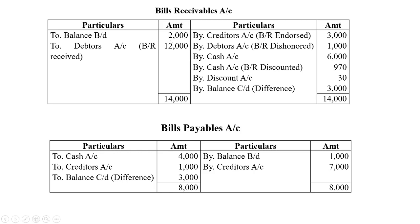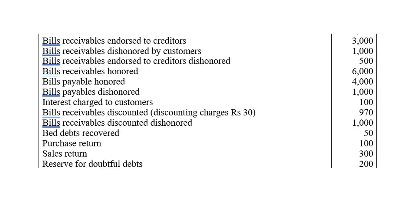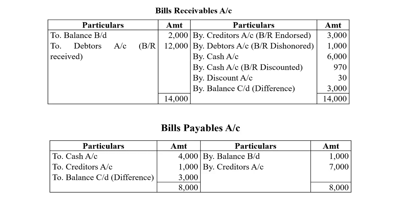Now for the bills receivable account: the opening balance brought down is 2,000 rupees. Bills receivable received during the year — to debtors account — bills received 12,000 rupees. By creditors account — bills receivable endorsed — 3,000 rupees entered to creditors account. Bills receivable dishonored — by cash account — 6,000 rupees.